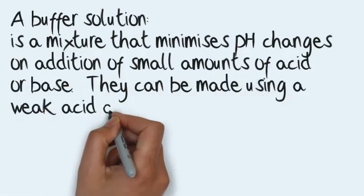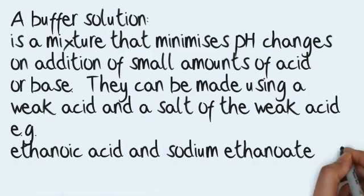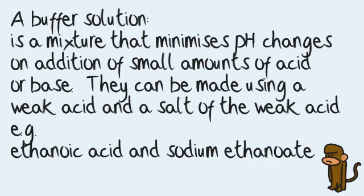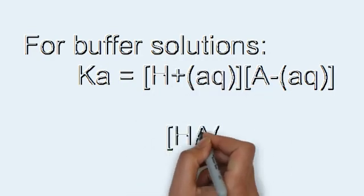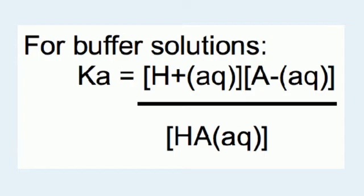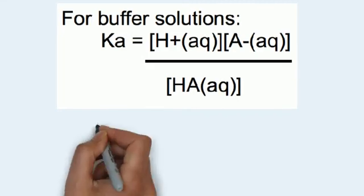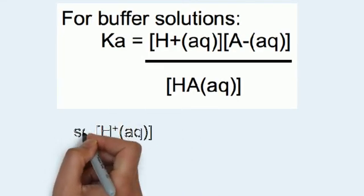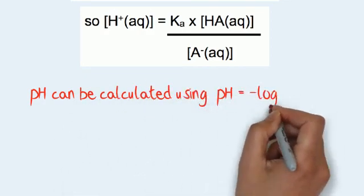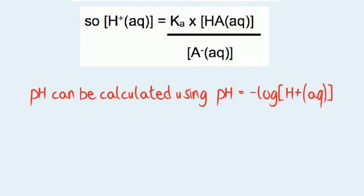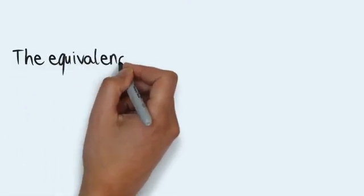A buffer solution is a mixture that minimises pH changes on addition of small amounts of acid or base. They can be made using a weak acid and a salt of the weak acid — for example, ethanoic acid and sodium ethanoate. This is a common exam question. For buffer solutions, Ka equals the concentration of H⁺ ions times the concentration of A⁻ ions divided by the concentration of the weak acid. Rearranging gives: the concentration of H⁺ ions equals Ka times the concentration of the weak acid divided by the concentration of the salt of the weak acid. pH can then be calculated using pH equals the negative log of the concentration of H⁺ ions.